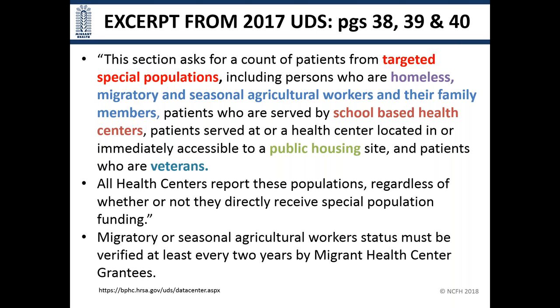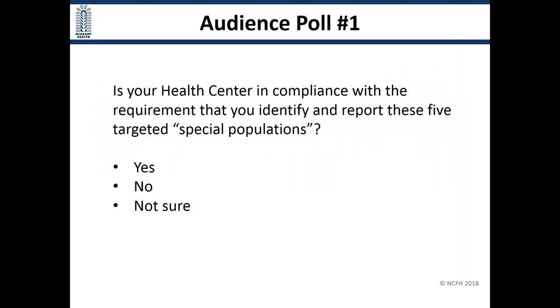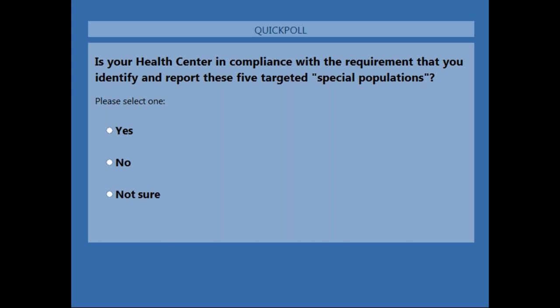All health centers report these populations regardless of whether or not they directly receive special population funding, and migratory and seasonal agricultural worker status must be verified at least every two years by migrant health center grantees. The poll question is: is your health center in compliance with the requirement that you identify and report these five targeted special populations?